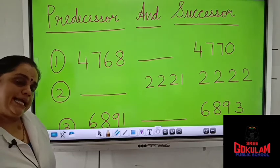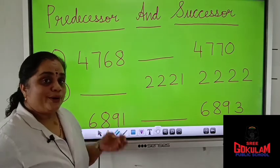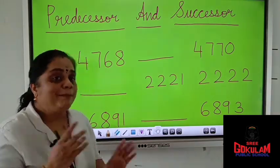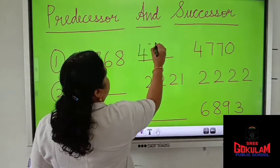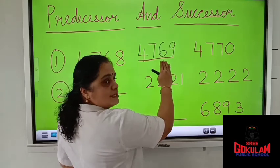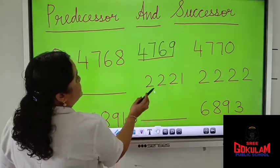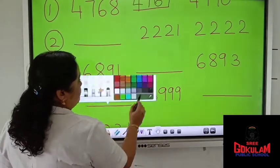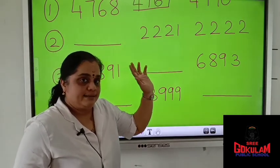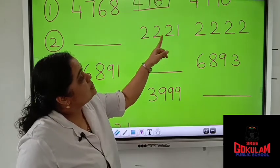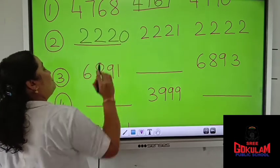Which number will come after 4,768? Just like your middle number, before number, after number — which number will come after 4,768? 4,769. And after 4,769? 4,770. Next one — which number will come before 2,221? Before — predecessor. Before 2,221, which number will come? 2,220.